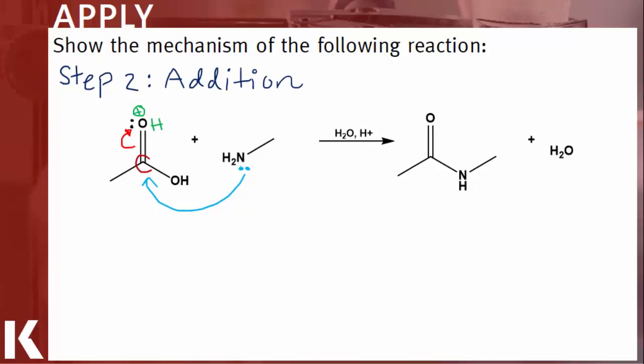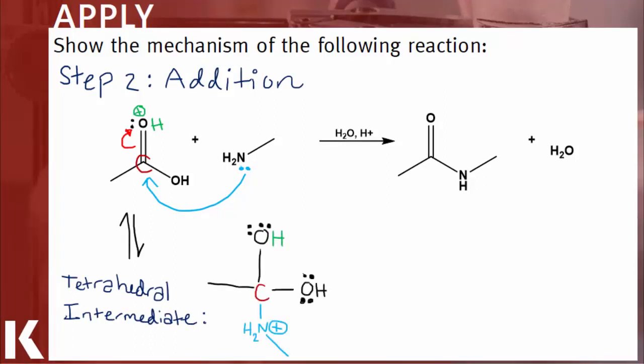The addition of the primary amine to the carbonyl carbon creates a tetrahedral intermediate, which looks like this. In a tetrahedral intermediate, this oxygen is happy because it has two bonds and four free electrons, and it's not carrying a positive charge anymore.